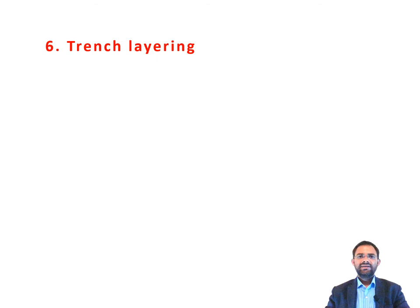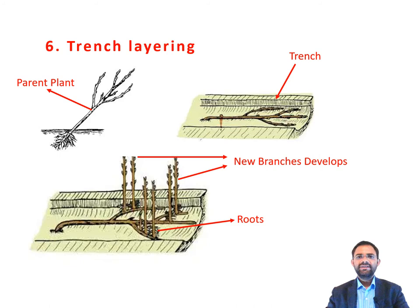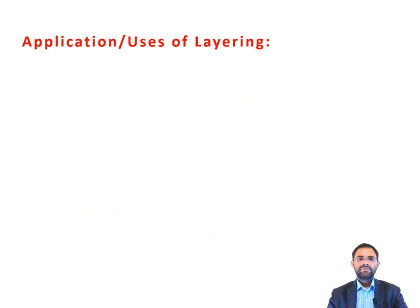The last one is trench layering. In this technique, plants to be layered or parts thereof are placed horizontally in trenches and soil is added to cover the new branches as they arise. New roots arise at the base of the developing branches and these new branches with their root system are removed from the plant and planted into a nursery or field. Only young plants up to one year old can be layered using this technique.